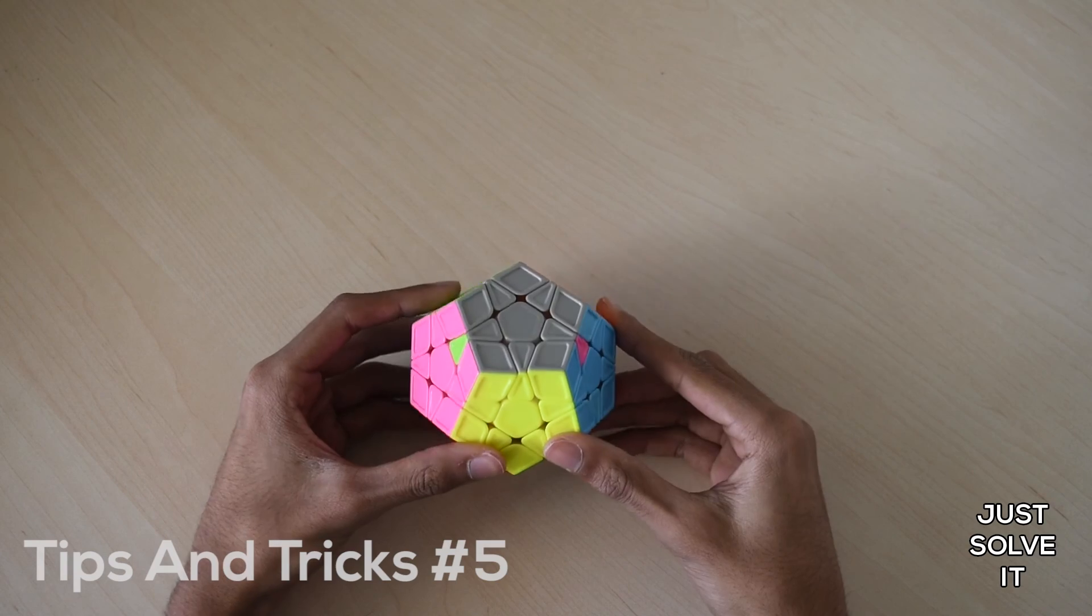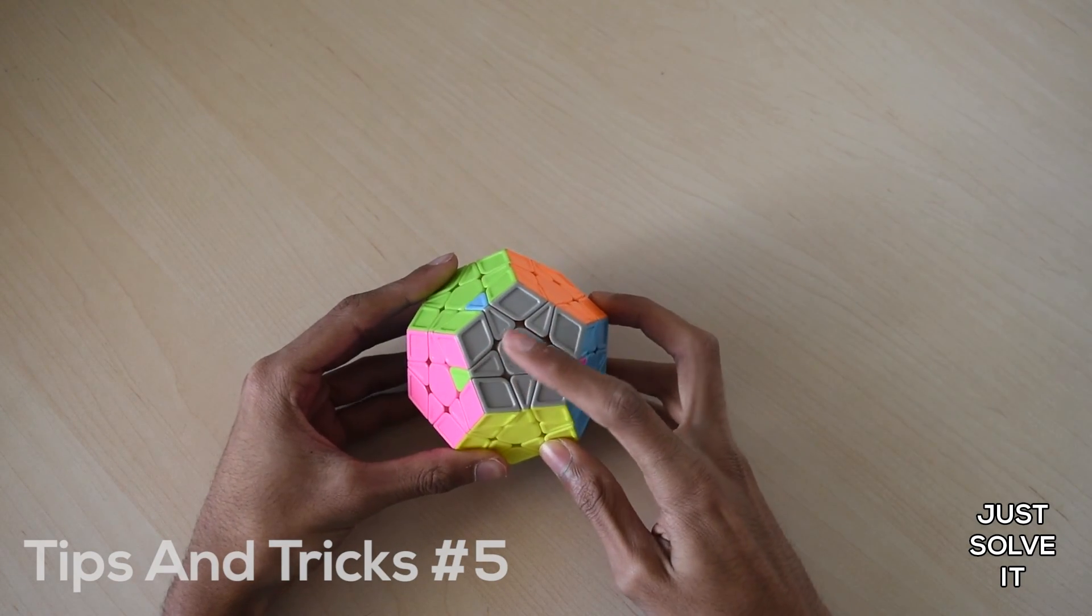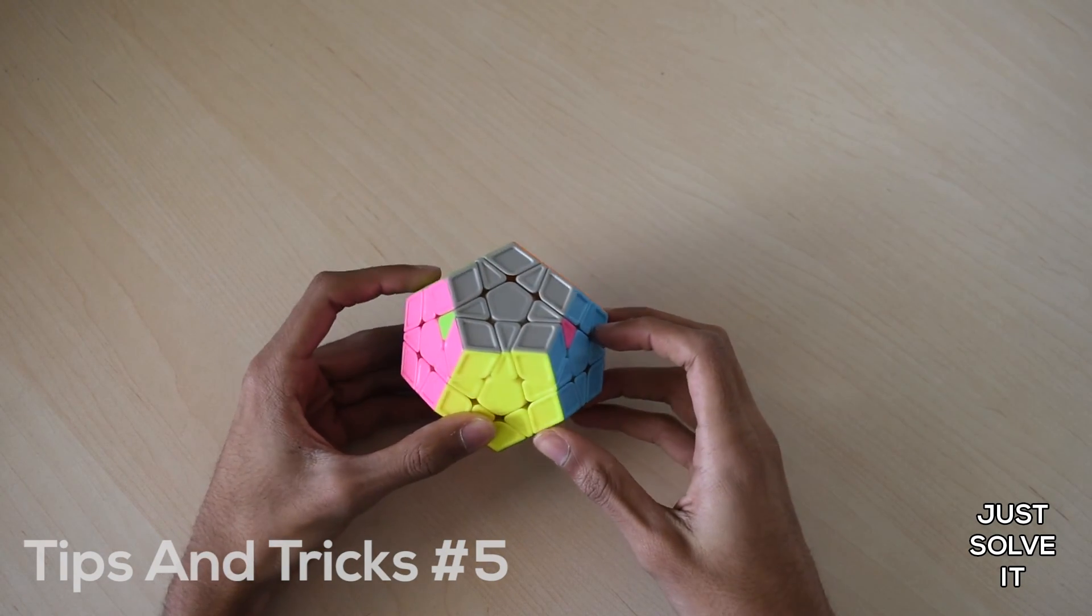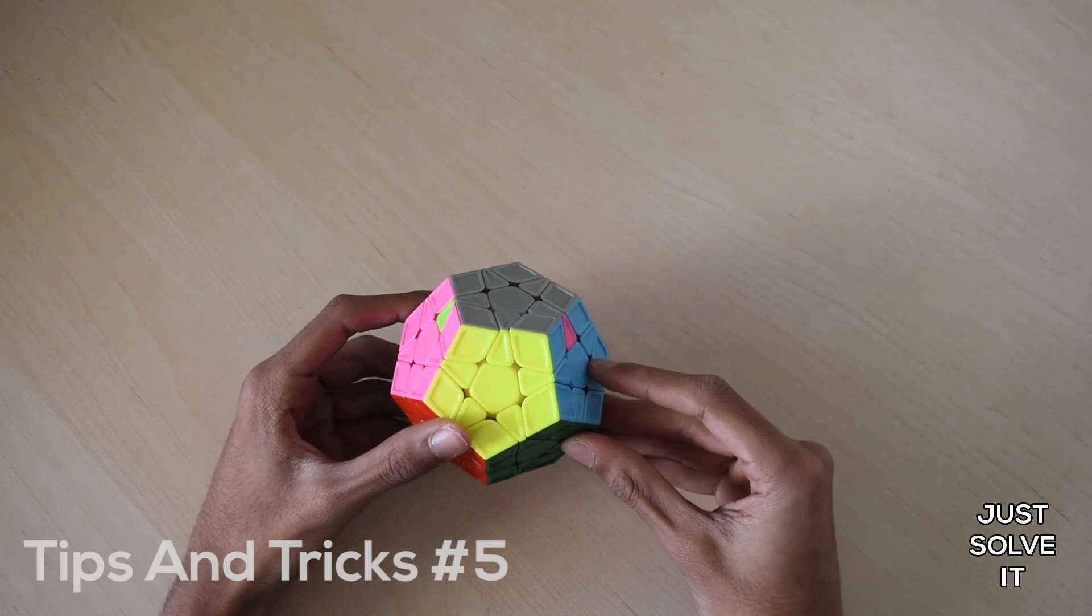This is the fourth and final case. It's where these three edges need to be cycled clockwise. To solve this case, hold it like this and do this algorithm.